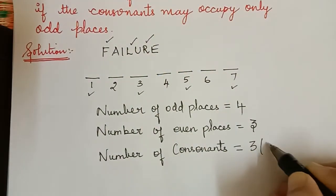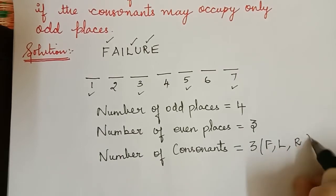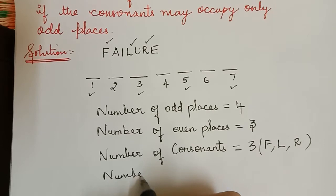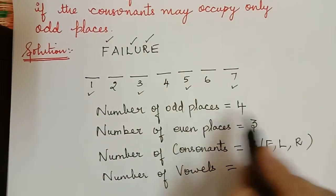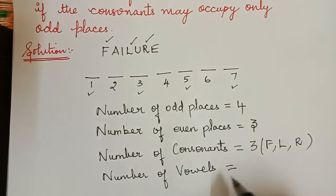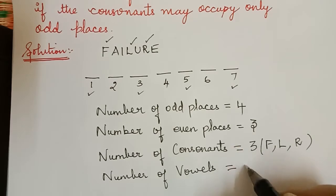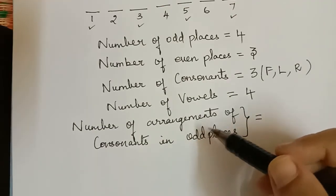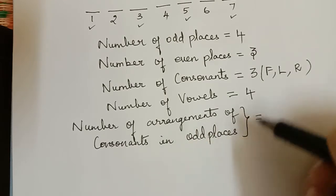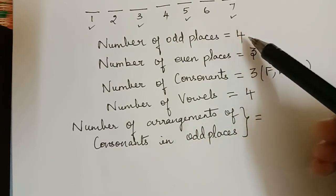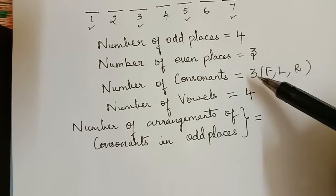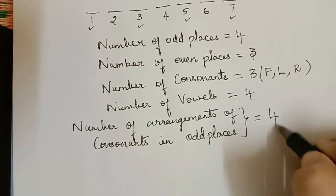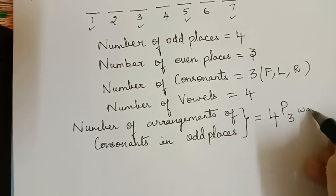So the number of consonants is equal to 3, which are F, L, and R. The remaining letters will be the vowels, so the number of vowels will be 7 minus 3, which is equal to 4. The number of arrangements of consonants in odd places: since there are 4 odd places and 3 consonants, 3 places will be filled by the consonants, which can be done in 4P3 ways.